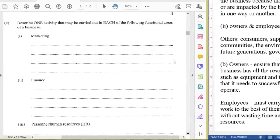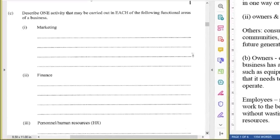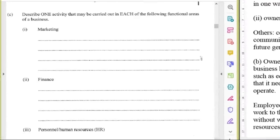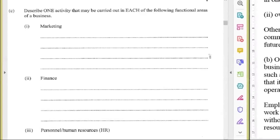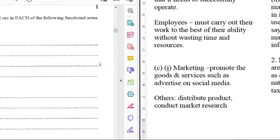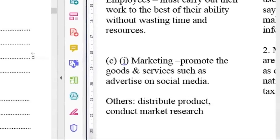Describe one activity that may be carried out in each of the following functional areas of a business: marketing, finance, personnel or human resource. Let's look at marketing. Marketing promotes the goods and services such as advertise on social media. Other activities could be distribute products, conduct market research.